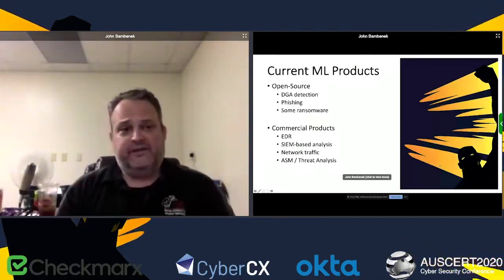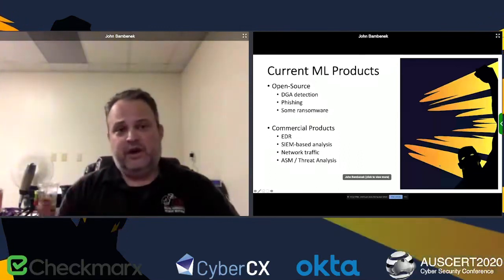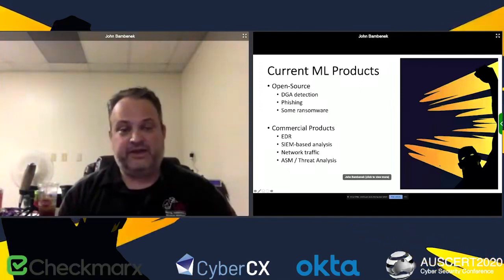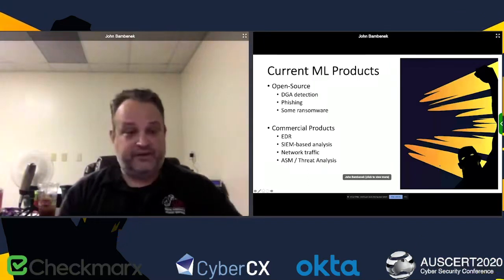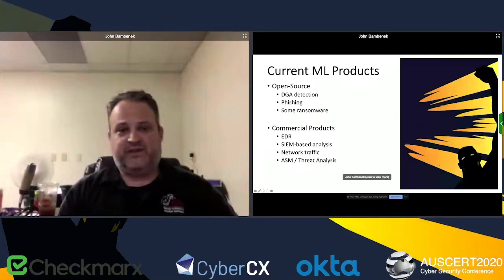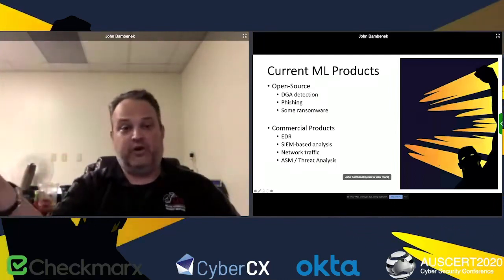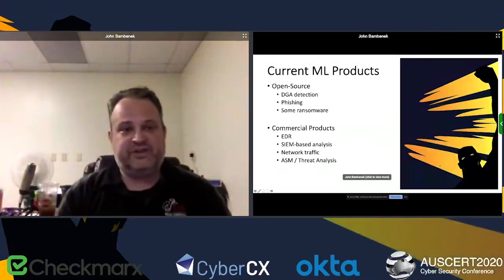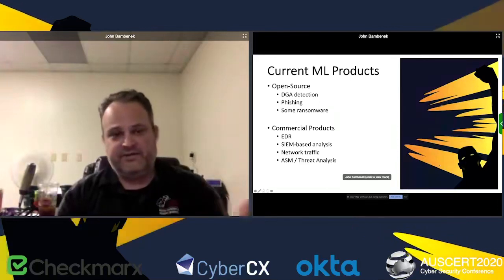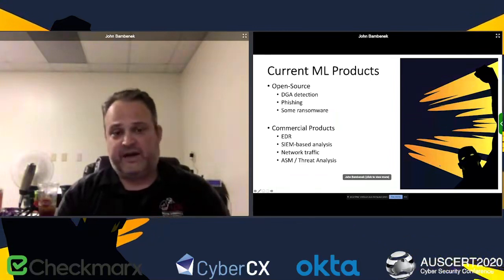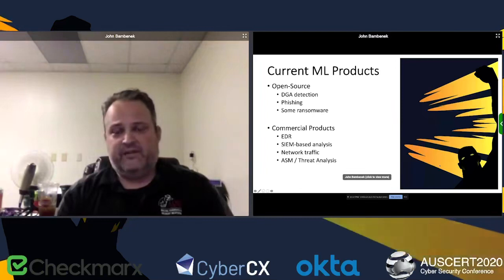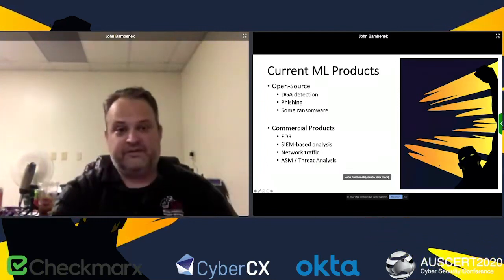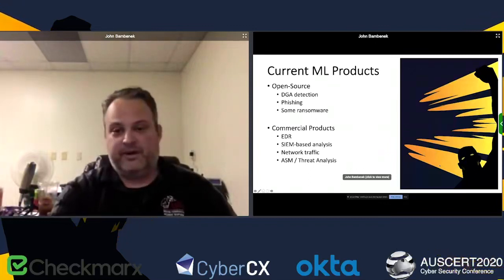There are open-source products and research to help detect whether a domain is generated by a domain generation algorithm (DGA). There are phishing detection tools — some using natural language processing, some using image recognition, such as detecting a PayPal logo on a non-PayPal property. There are commercial products advertising machine learning for endpoint security, SIEM-based analysis, network traffic monitoring, and threat-vulnerability analysis. People are deploying machine learning to figure out what really matters in terms of threats on the network — whether those technologies are all they're made out to be is another question.